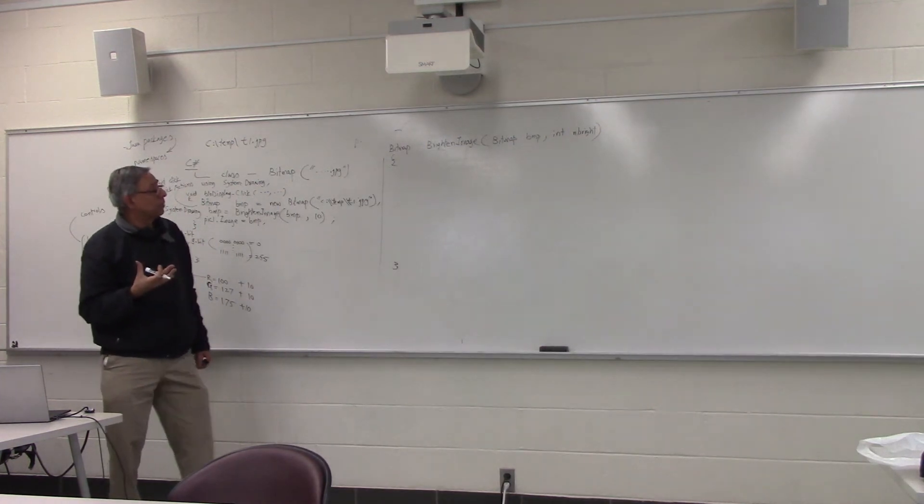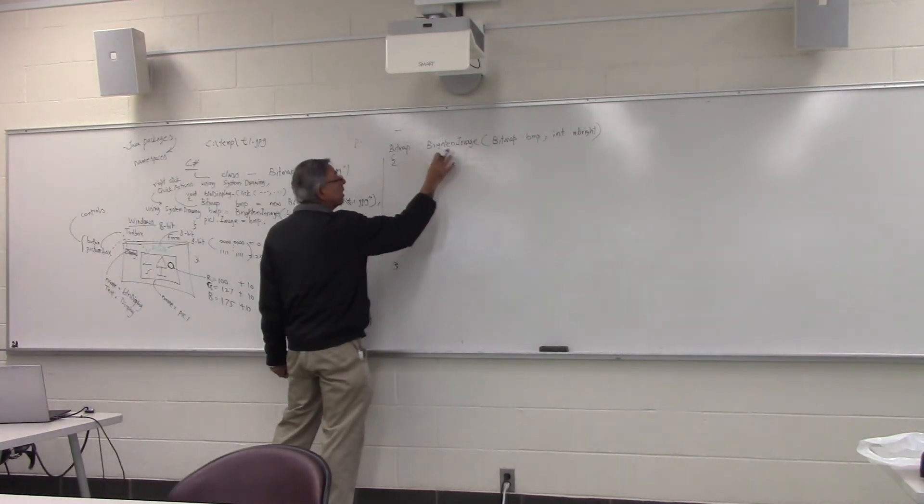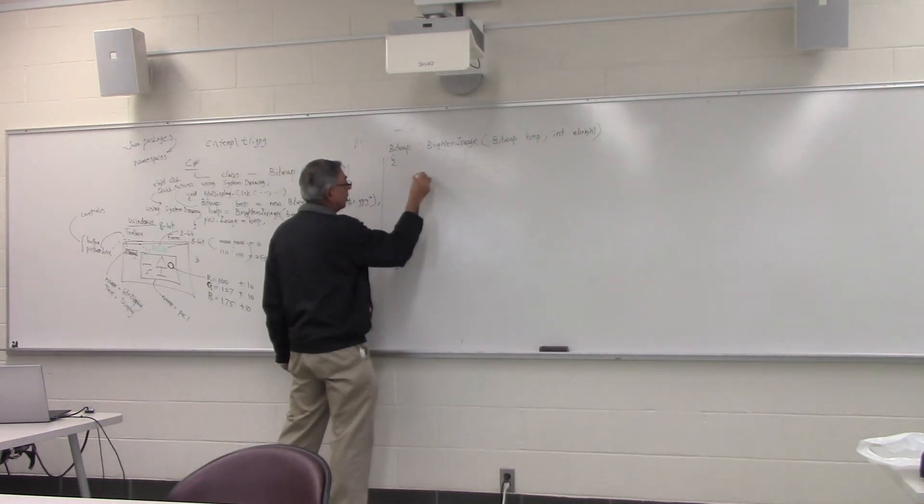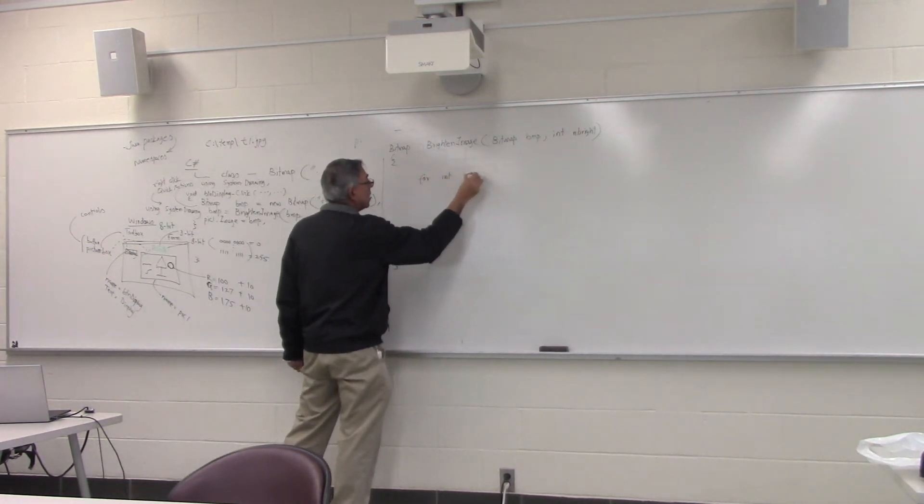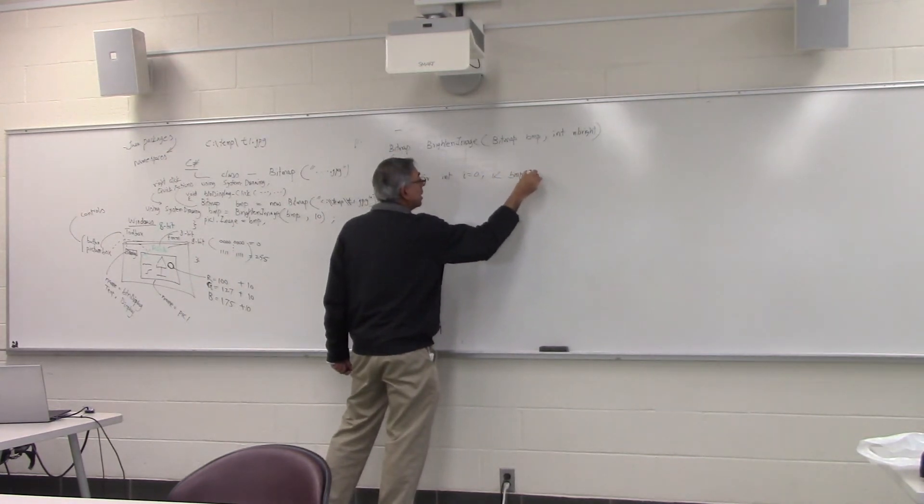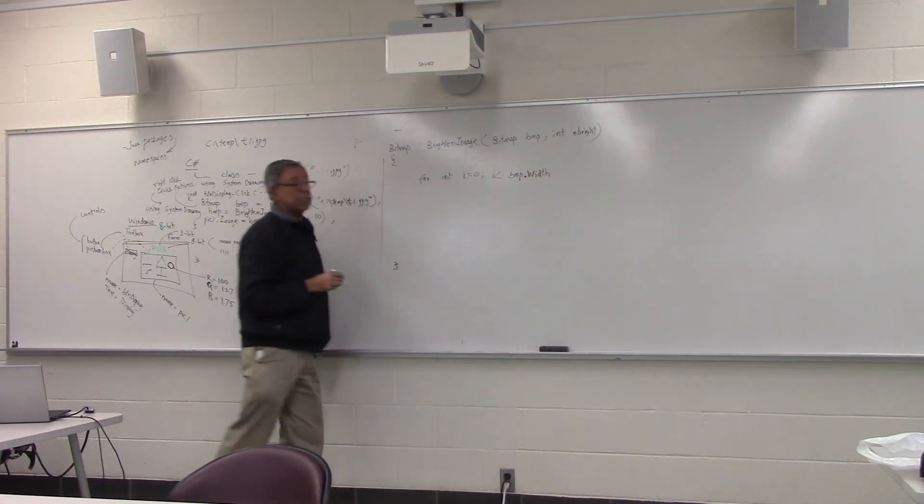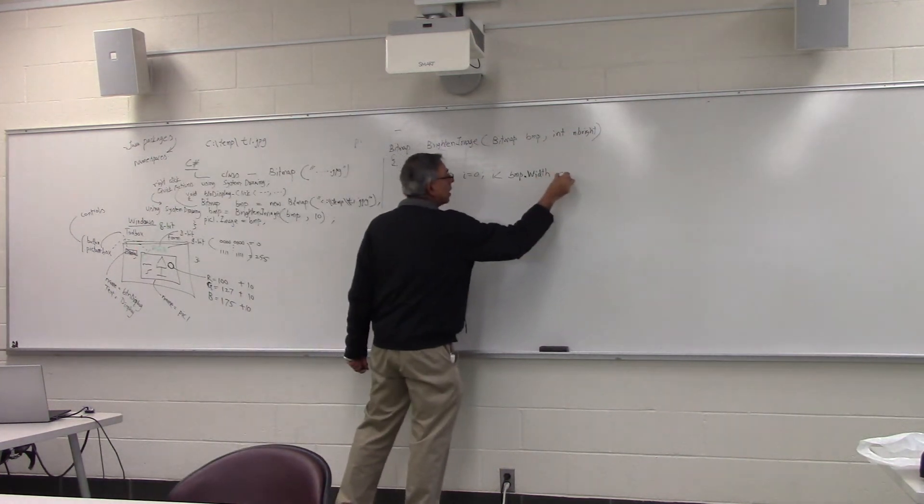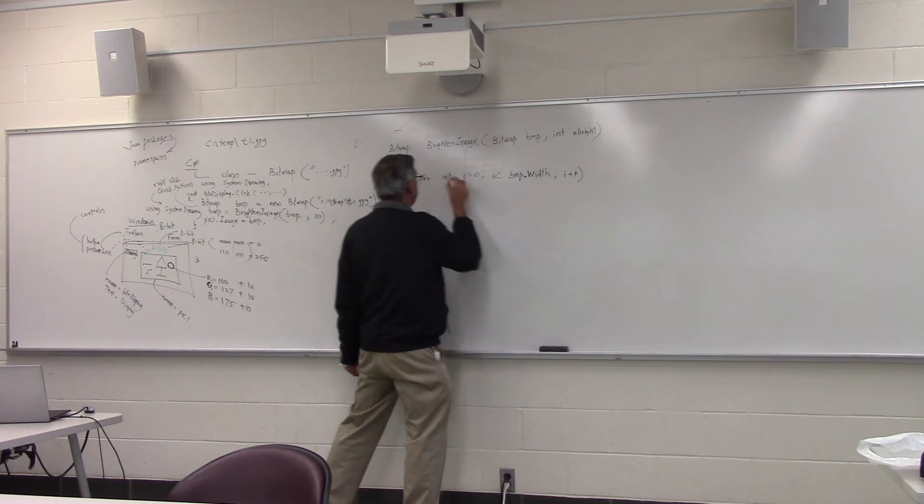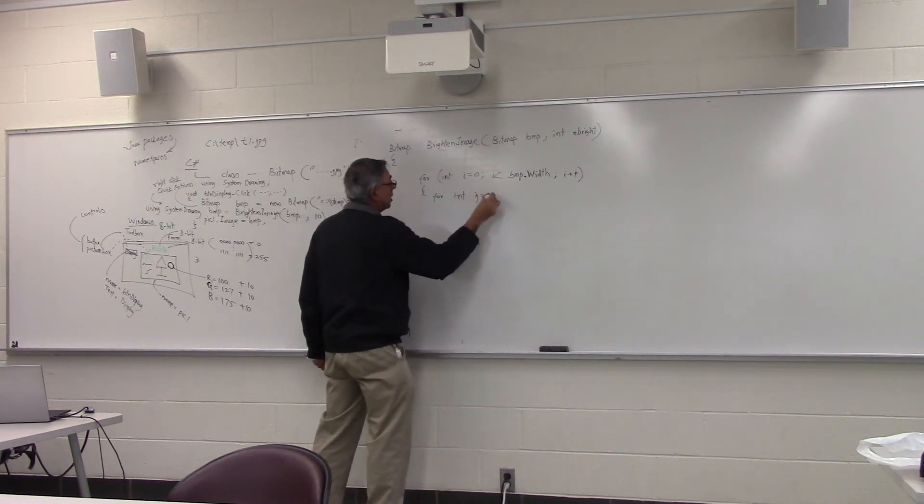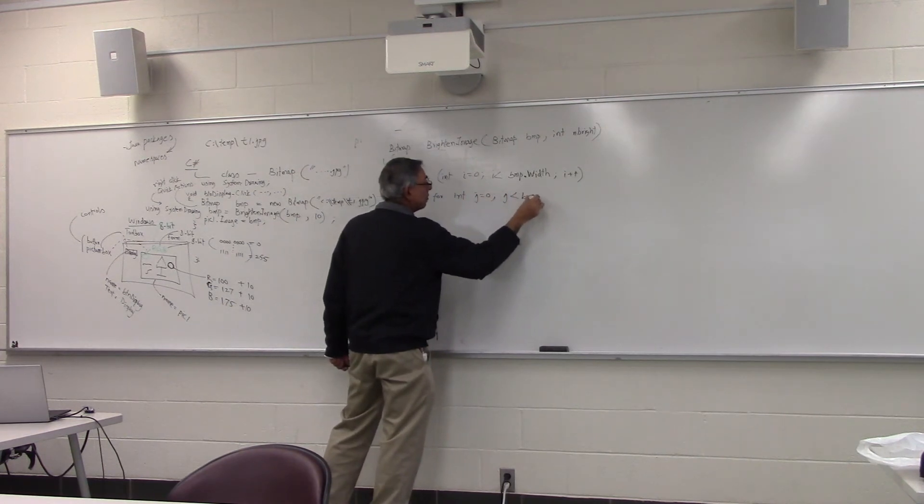Now our code will look something like this. Remember, the bitmap is just a collection of 2D array of pixels. We will go in a loop for int i equal to 0, i less than bmp.width. Every bitmap has a width property and a height property. i plus plus for int j equal to 0, j less than bmp.height.